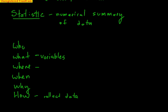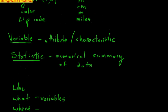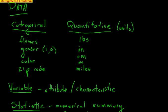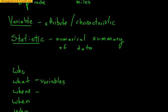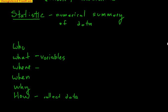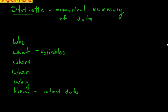So do a quick recap here. There's two different types of data that we collect. We've got categorical, quantitative. Quantitative's got to have units, typically numbers, categorical, typically words. But be careful, like with zip code and stuff like that. A variable is any attribute or characteristics of an individual or an object that we analyze. A statistic is a numerical summary of data, for example, the average. And any time we analyze data, we want to look at the who, what, where, when, and why. Who are we looking at? What are we looking at? That's the variables. Where, when, why, and how did we collect that data?